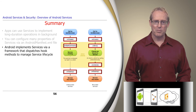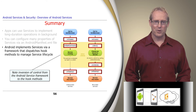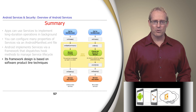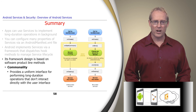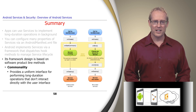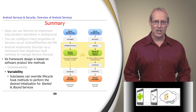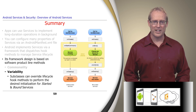Since started and bound services are implemented as part of Android's service framework, they support inversion of control. Android's middleware dispatches hook methods to manage the service lifecycle in response to infrastructure and application events. The design of Android's service framework is based on software product line techniques guided by commonality and variability analysis. For example, Android's service framework enhances commonality by defining a uniform interface for performing long-duration operations that don't interact directly with the user interface. Likewise, this framework handles variability by providing a uniform means for subclasses to override lifecycle hook methods that perform the desired initialization for started and bound services.